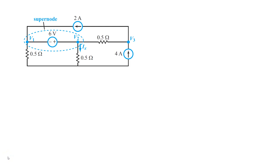Let's take a look at this circuit. We are asked to figure out what is the node voltage at nodes marked 1, 2, and 3. So V1 is the node voltage at node 1, V2 is the node voltage at node 2, and V3 is the node voltage at node 3. We're also asked to figure out that middle current Ix.